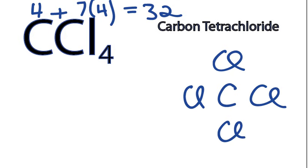Okay, so now we've got 32 valence electrons to work with. We'll form chemical bonds first between the carbon and the chlorines. So we've done that. We've used 8 valence electrons.